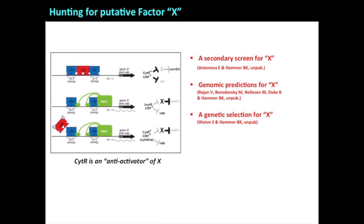Then Sumit, a new grad student in the lab, performs a similar experiment but screens by fusing this promoter to an antibiotic gene — if you get a mutation in X you should get colonies coming up. He did that five separate times: nothing. So Sumit and Jacob Thomas, my new postdoc, decided to do an RNA-seq experiment. Fourteen weeks and five thousand dollars later, we get this enormous data set.